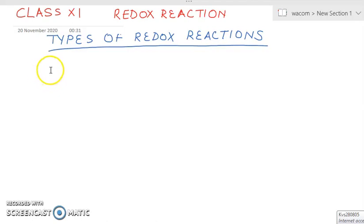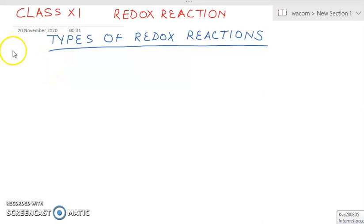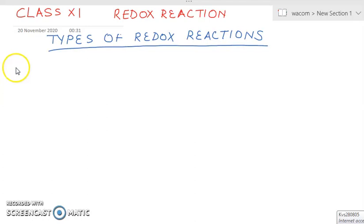Hello students, in today's video lecture we are going to talk about different types of redox reactions. There are four types of redox reactions: combination, decomposition, displacement, and disproportionation.